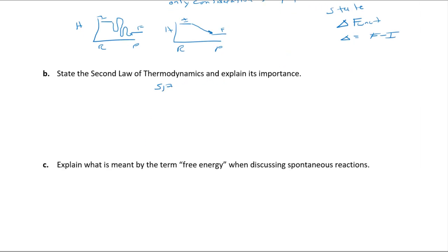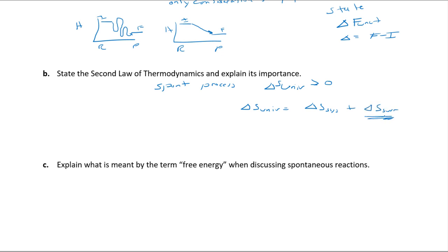The second law of thermodynamics is straightforward: for any spontaneous physical or chemical process, the delta S of the universe must be greater than zero. Remember that delta S_universe = delta S_system + delta S_surroundings. Thinking about both can be challenging, but the second law requires that for any spontaneous process, delta S for the universe is positive.